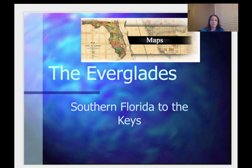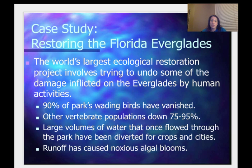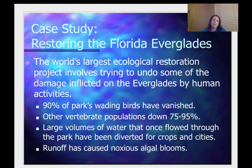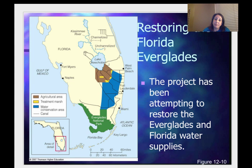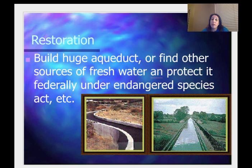The Everglades is in Southern Florida and is the world's largest ecological restoration. This case study should be familiar for the AP exam: 90% of the park's wading birds have vanished, other vertebrate populations are down, and large volumes of water that once flowed have been diverted to crops. We're seeing an increase of invasive species such as the python — they're doing a contest right now to catch pythons. Runoff has caused a lot of noxious, very toxic algal blooms. In Miami, the city encroaches on the Everglades, causing people-versus-wildlife conflicts. They're trying to restore it by building aqueducts or finding other sources to protect those endangered species.